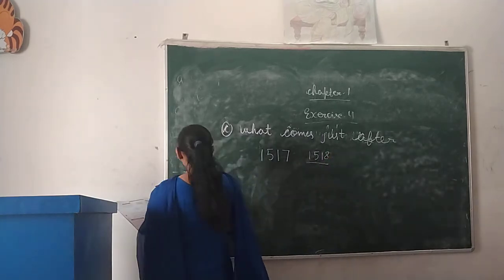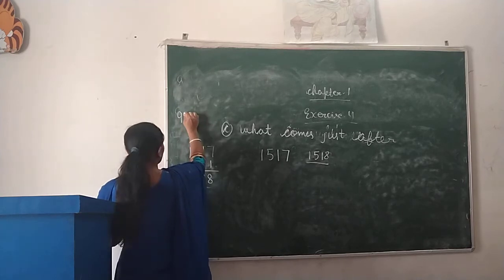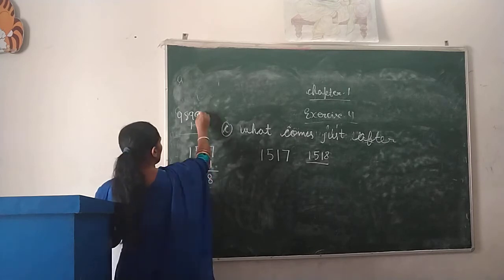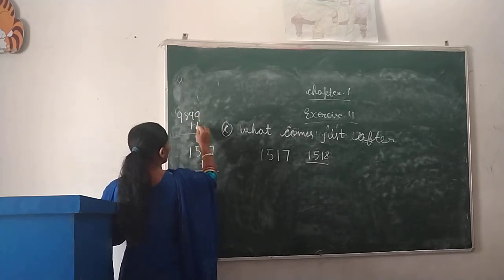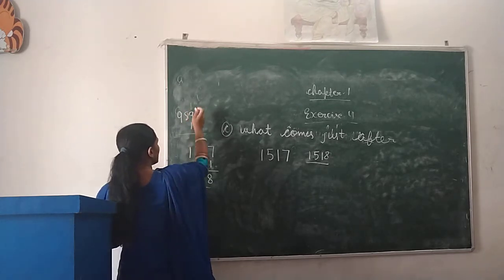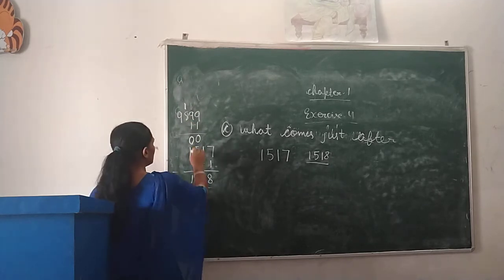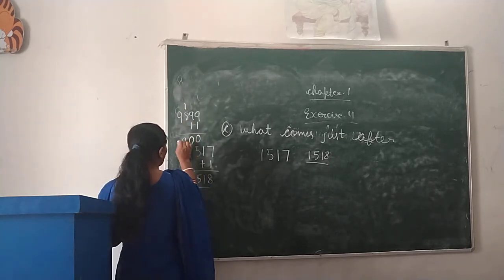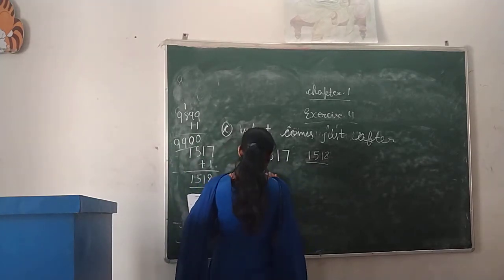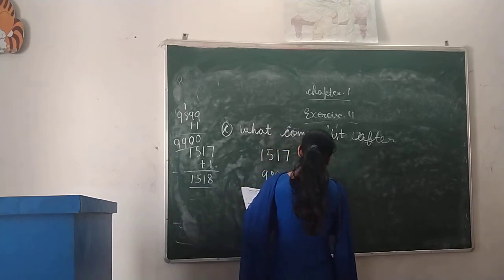Next: 9,890. We will add 1. 9 plus 1 is 10, write 0 and carry. 9 plus 1 is 10, write 0 and carry. 8 plus 1 is 9. So we get 9,900.